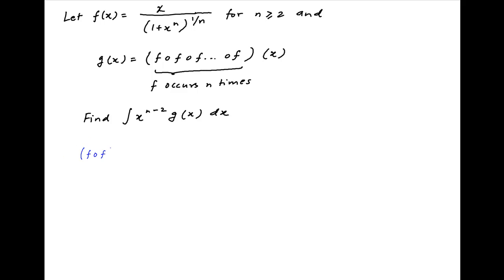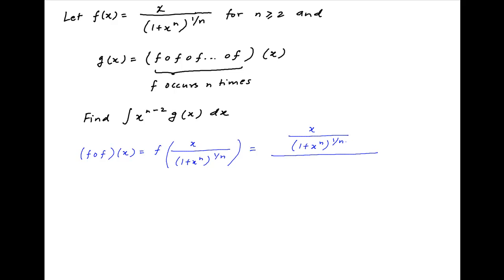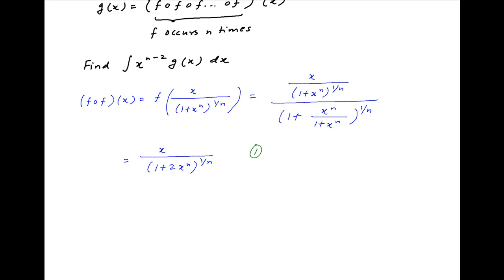We start by evaluating f of f of x. Plugging in the value of f(x), this is equal to f of x upon 1 plus x raised to the power n, whole raised to the power 1 upon n, which using the expression for f(x) simplifies to x upon 1 plus 2x raised to the power n, whole raised to the power 1 upon n. Let's denote this by Result 1.